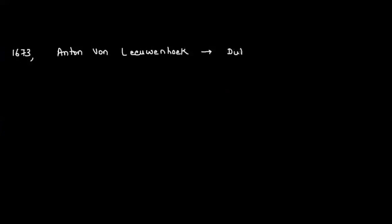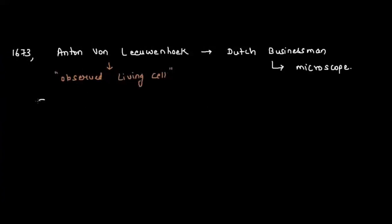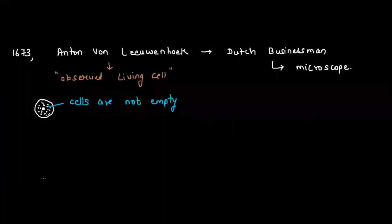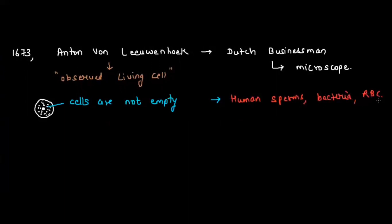In 1673, Anton van Leeuwenhoek, a Dutch businessman who sold and created his own microscopes, observed living cells. He took dirty water and observed amoebas, scraping of gums, sperms, and many other things. He told that cells are not empty — they are filled up by some kind of liquid. He observed human sperms, bacteria, RBCs, and scraping of gums. It was finally proven that cells are not empty. Robert Hooke discovered the cell, but Anton van Leeuwenhoek discovered the living cell.